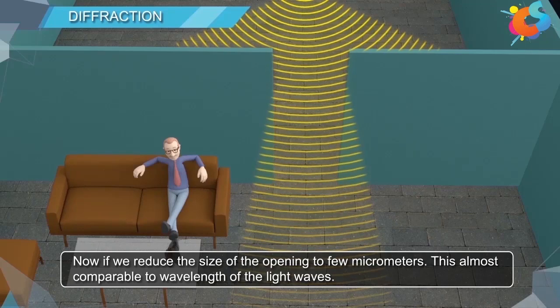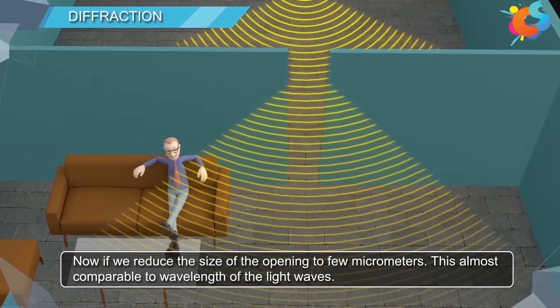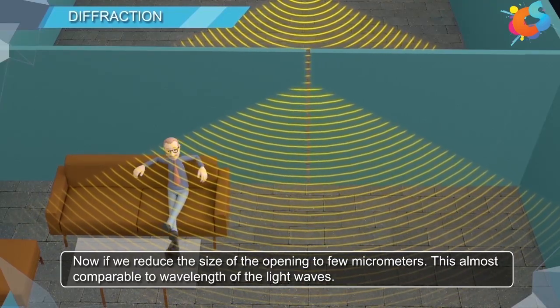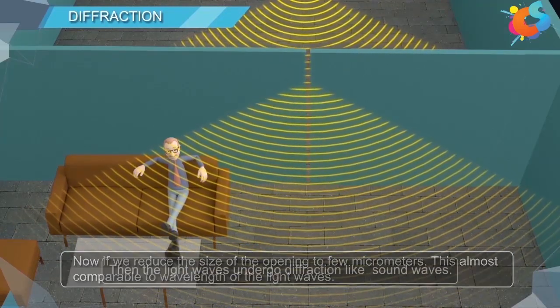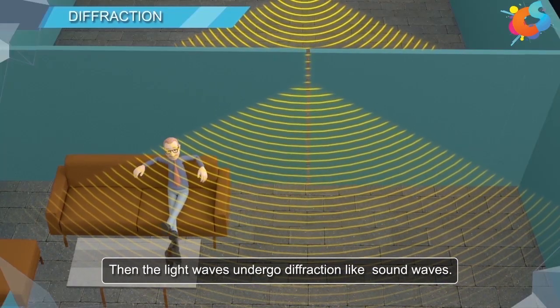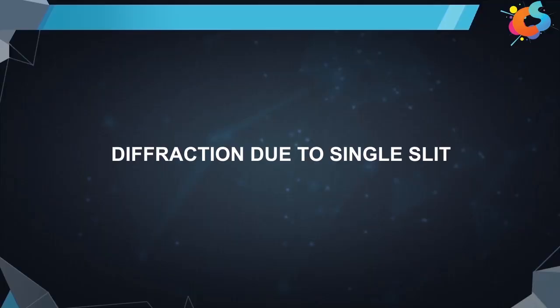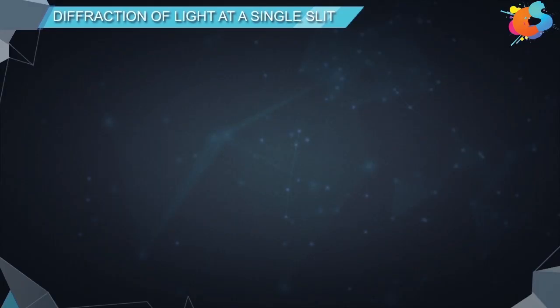If we reduce the size of the opening to a few micrometers, which is almost comparable to the wavelength of light waves, then light waves undergo diffraction like sound waves. Fraunhofer's diffraction at a single slit: when a monochromatic light wave is allowed to fall on a tiny opening with size in a few micrometers, the light undergoes diffraction.